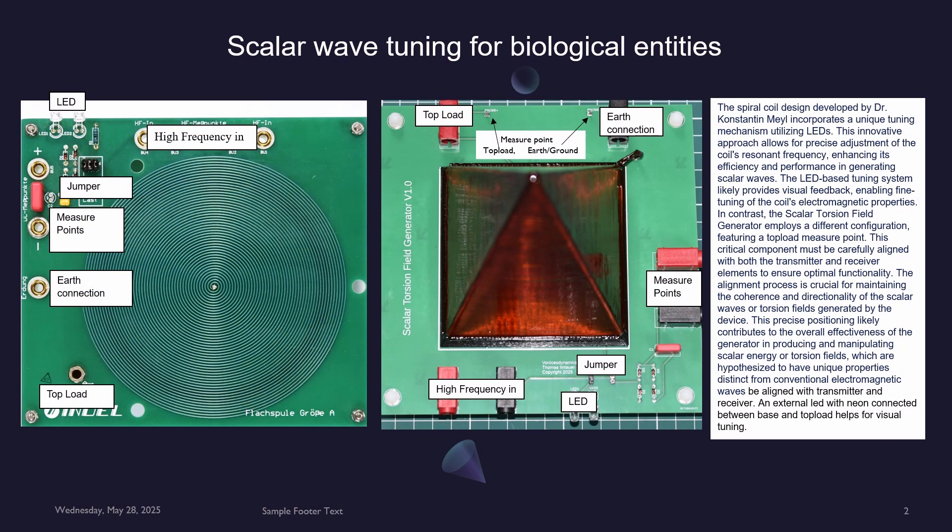The spiral coil design developed by Dr. Constantine Mayle incorporates a unique tuning mechanism utilizing LEDs. This innovative approach allows for precise adjustment of the coil's resonant frequency, enhancing its efficiency and performance in generating scalar waves. The LED-based tuning system likely provides visual feedback, enabling fine-tuning of the coil's electromagnetic properties.